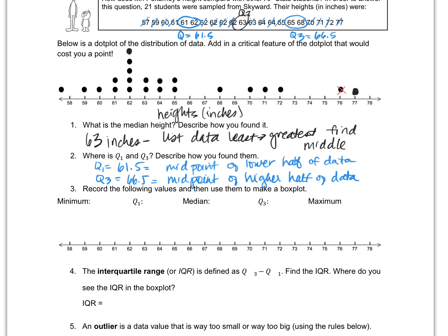So Q1 is 61 and a half, the midpoint of the lower half of the data. Q3 we found to be 66 and a half, the midpoint of the higher half of the data. Now it says record the following values and then use them to make a box plot. So minimum is the smallest number, right? 57. Q1 we said was 61 and a half. Median was 63. Q3 was 66 and a half. And then max is 77.